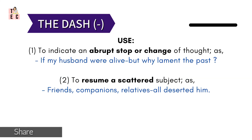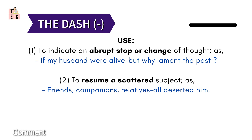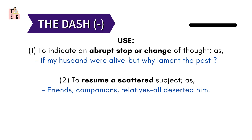Dash indicates an abrupt stop or change of thought. For example: 'If my husband were alive — but why lament the past?' Here, the sentence was going to speak more about the husband, but it was disrupted in between and there is a change of sentence with the use of a dash. It is also used to resume a scattered subject — like: 'Friends, Companion, Relatives — all deserted him.' Here, Friends, Companion, and Relatives were scattered, but they are brought together into a meaningful sentence with the use of dash followed by 'all.'